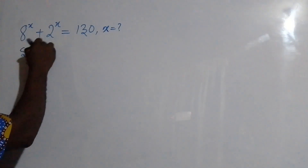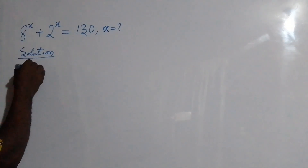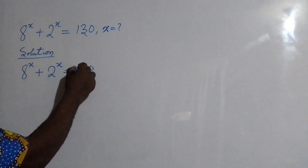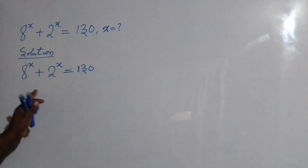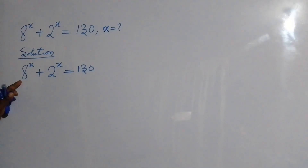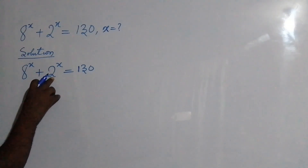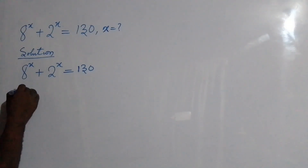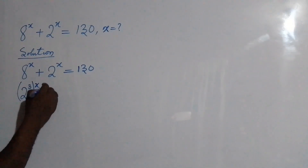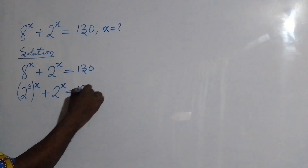So we have the solution: 8 to the power of x plus 2 to the power of x equal to 130. To solve this problem, we start with 8 to the power of x and express it in base 2. So we have 2 to the power of 3 — that is the 8 — as 2 to the power of 3, all to the power of x, plus 2 to the power of x equal to 130.